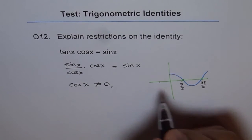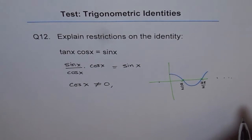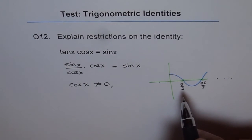Likewise, it will be 0 here, here and so on. So those are the points at which cos x is 0 and which is a restriction.